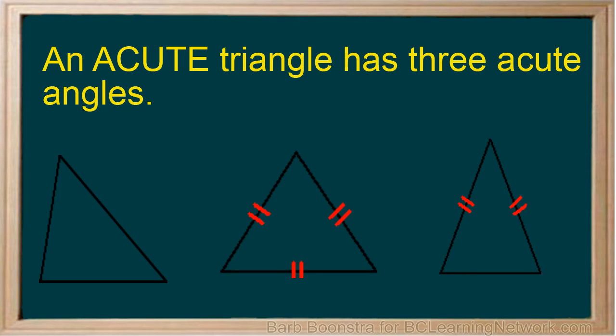You have learned that triangles can be classified by the length of their sides. They can also be classified by the size of their angles. These are acute triangles. They have three acute angles. Notice that acute triangles can also be isosceles triangles or equilateral triangles.